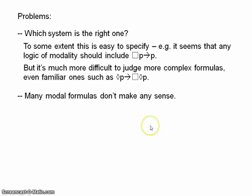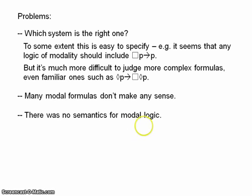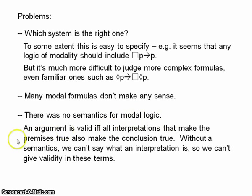Now, perhaps worse, Lewis didn't provide a semantics for his logic. Validity is often defined in terms of interpretations. We say that some argument is valid if and only if all the interpretations that make the premises true also make the conclusion true. But without a semantics, we can't say what an interpretation is. So, we can't give validity in these terms.